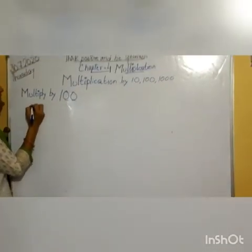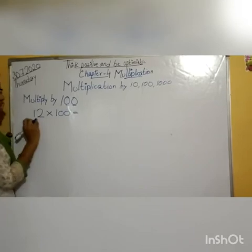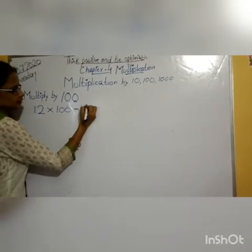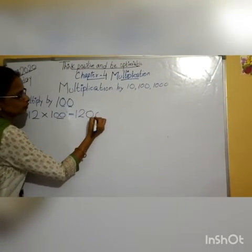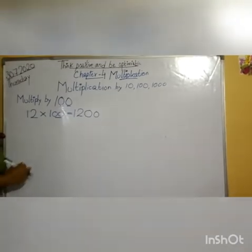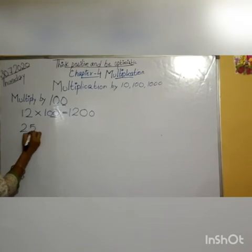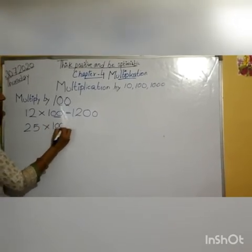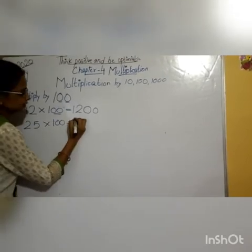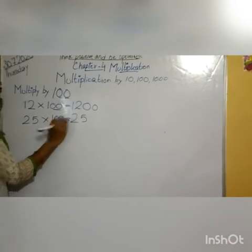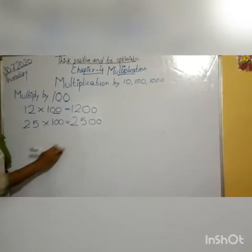Let us start. For example, if we take 12 multiply by 100 — I am going to put these two zeros to the extreme right of the number. The answer is 1200. Next, take one more digit: 25. 25 multiply by 100. First write the two digits, that is 25, and add these two more zeros to the extreme right of the number. The answer is 2500.